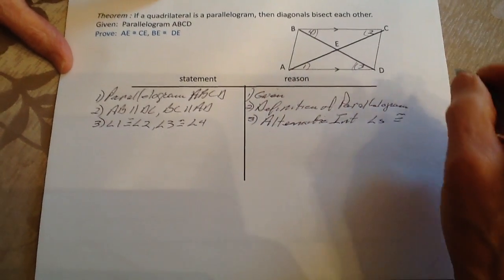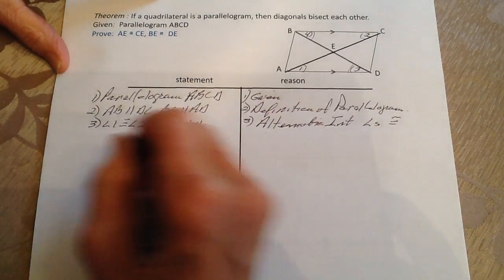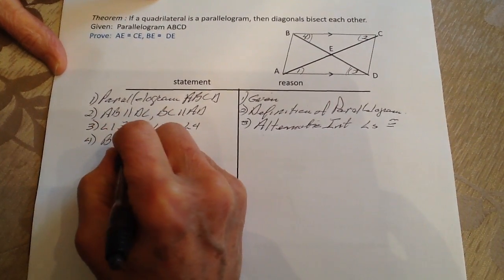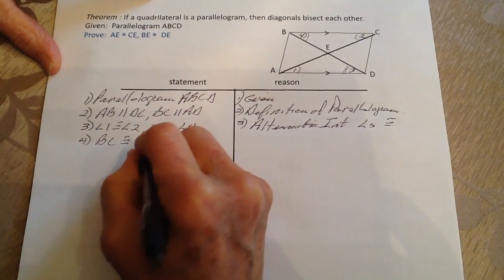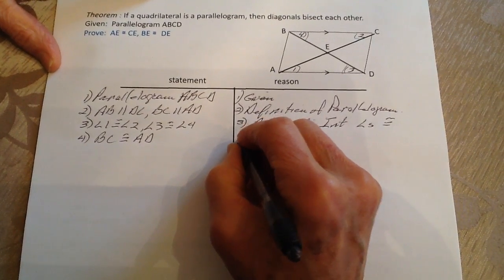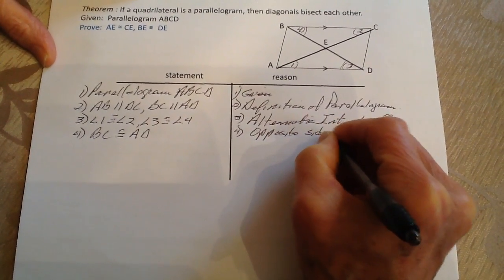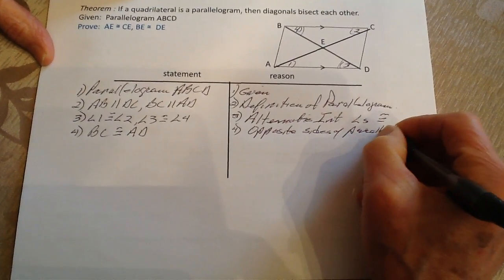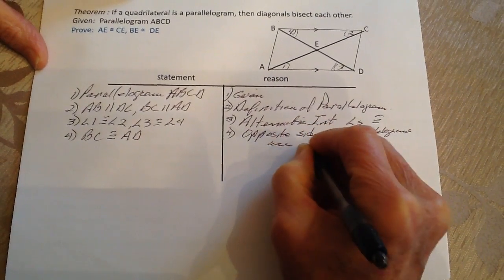Now we know the opposite sides are congruent — we did that in an earlier proof. So step four: BC is congruent to AD, because opposite sides of a parallelogram are congruent.